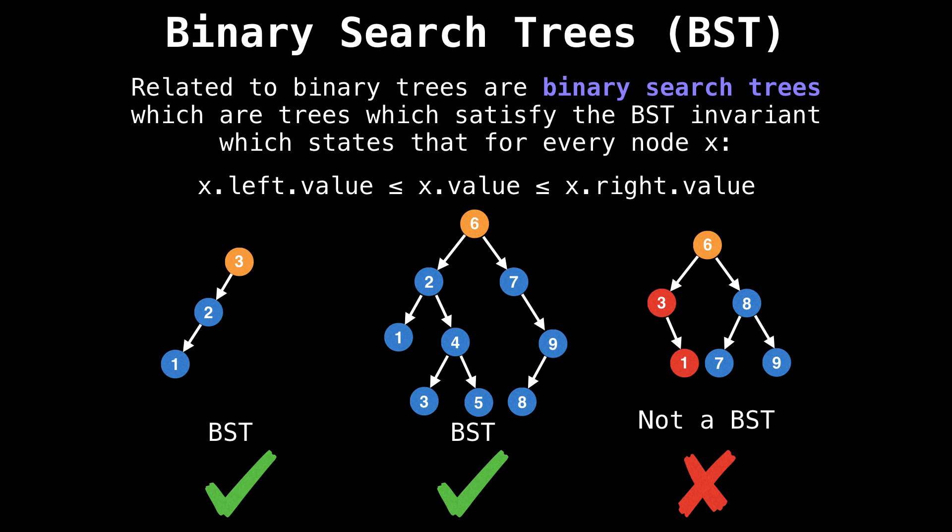Now related to binary trees are binary search trees, which are trees which satisfy the binary search tree invariant. The binary search tree invariant states that for every node x, the values in the left subtree are less than or equal to x, and that the values in the right subtree are greater than or equal to x. This neat little property enables you to quickly search through the tree and retrieve the values you want, which is particularly handy. All the trees on this slide are binary search trees except for the last one, which is not a binary search tree because one is not greater than or equal to three.